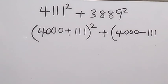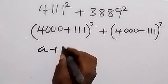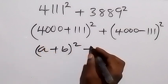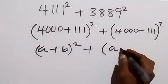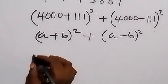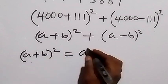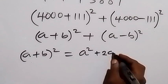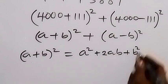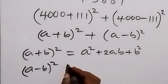So that will give us 3889 squared. From here, this bracket takes the form (a + b) squared, and this bracket takes the form (a - b) squared. We should not forget that (a + b) squared, when expanded, becomes a squared plus 2ab plus b squared. Also, (a - b) squared, when expanded, becomes a squared minus 2ab plus b squared.